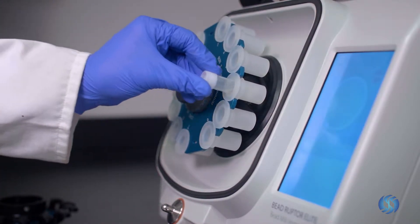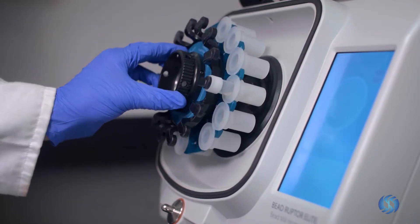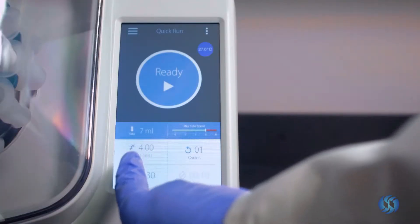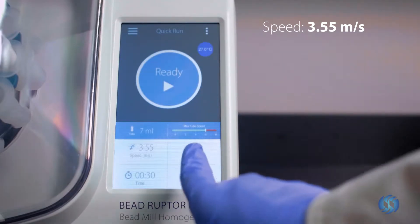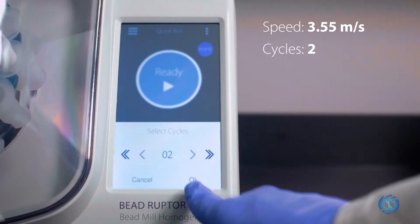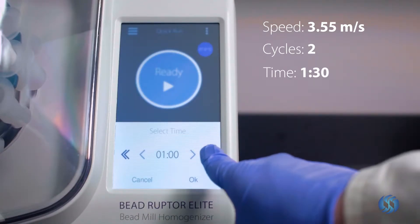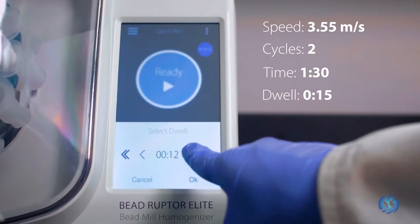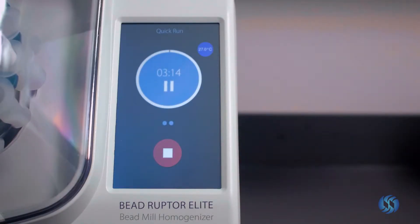Load the 7-milliliter tube into the BeadRuptor Elite. Set the speed to 3.55 meters per second. Set the cycle to 2. Set the timer to 1 minute and 30 seconds. Set the dwell time to 15 seconds. Press ready to begin the processing cycle.